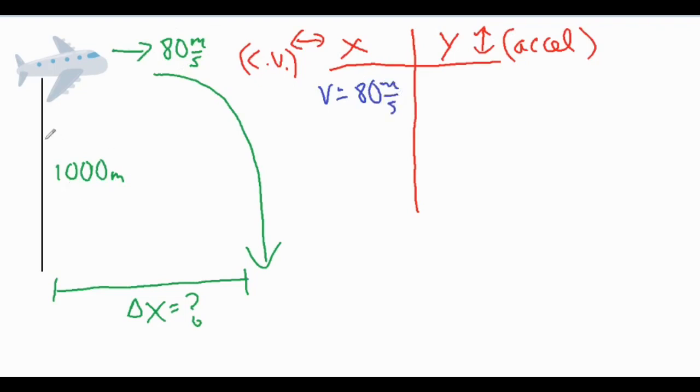And then our 1000 meters is going to be a vertical value. So our delta y is going to be negative 1000, because our package is falling 1000 meters. So its displacement is negative 1000 meters.